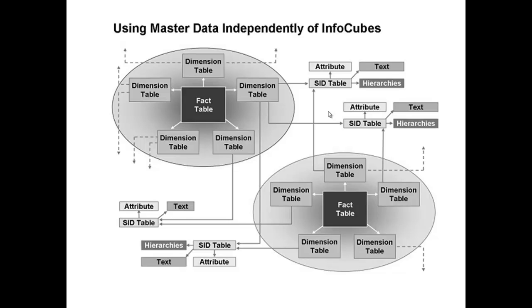This is what is being explained in this figure. Hopefully you now have a clear picture of the difference between star schema and extended star schema, and how the extended star schema uses SID technology to keep master data information outside your info cube and dimension table, enabling reuse across all available info cubes. Thank you.